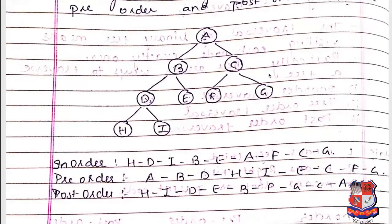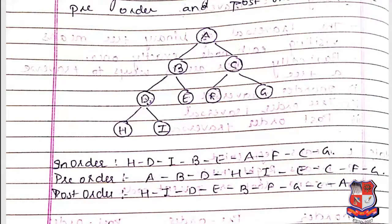Let us work through another example. For a given binary tree, find the in-order, pre-order, and post-order traversals. For in-order (left, root, right): starting from A, go to left child B, then left child D, then left child H. H is visited first, then root D, then right child I.